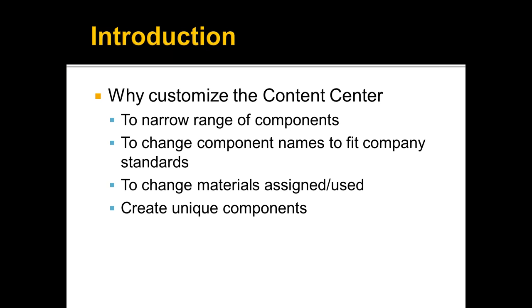So one of the biggest reasons to customize the Content Center is to reduce how many components are there. If it is 1.8 million components, I don't know of any companies that use that many purchased parts in their design, except for maybe NASA. For most companies I've encountered, you might have basic standard inch bolts, basic standard metric screws, washers, bearings, or circlips. When you look at just the basic component shape, there might be 100, 200, maybe 300 components purchased.